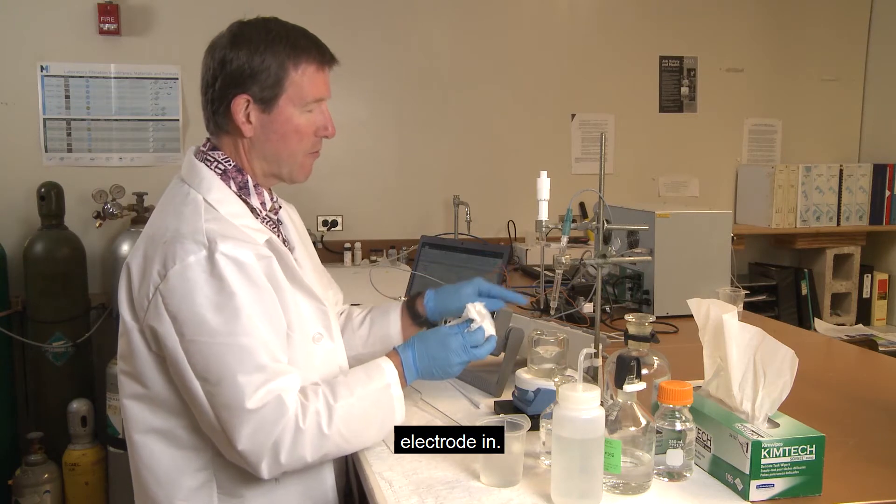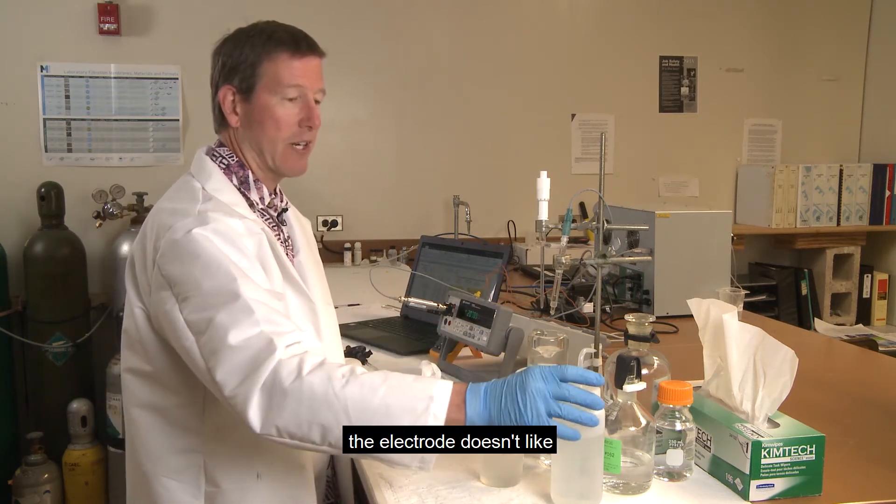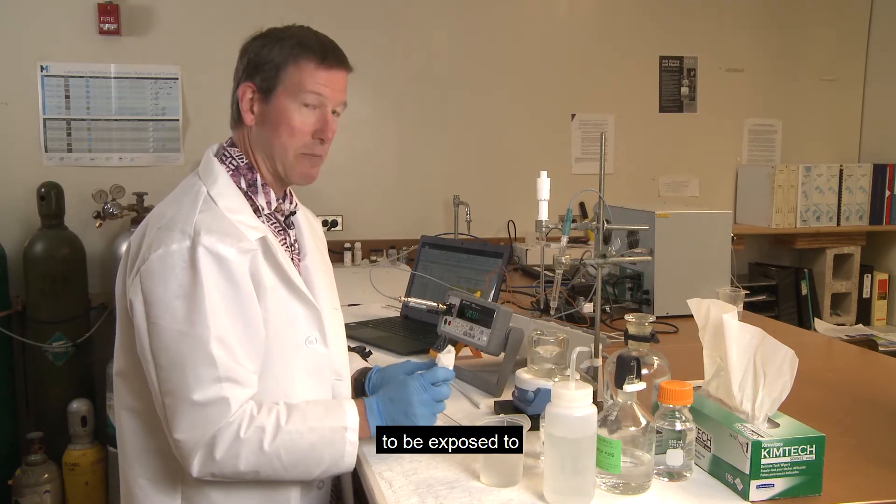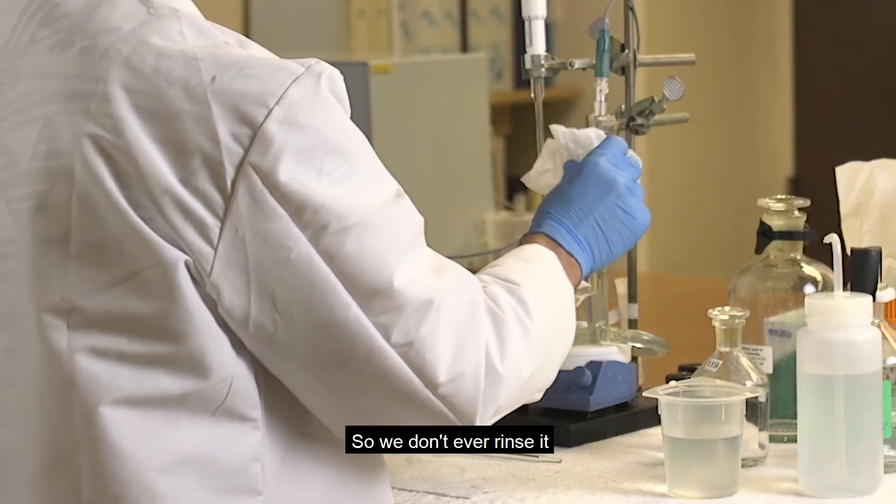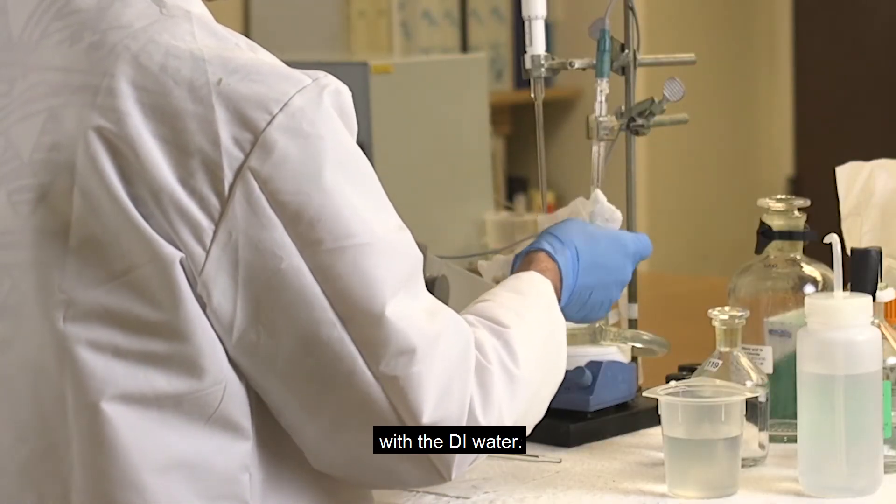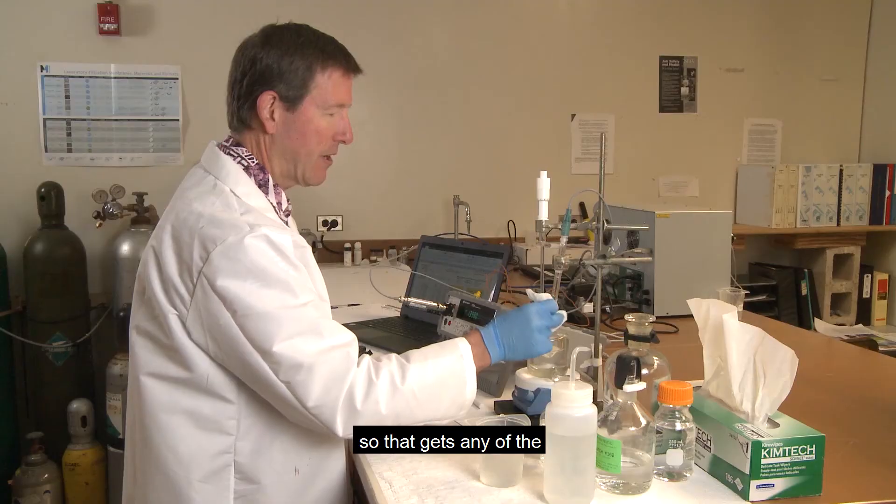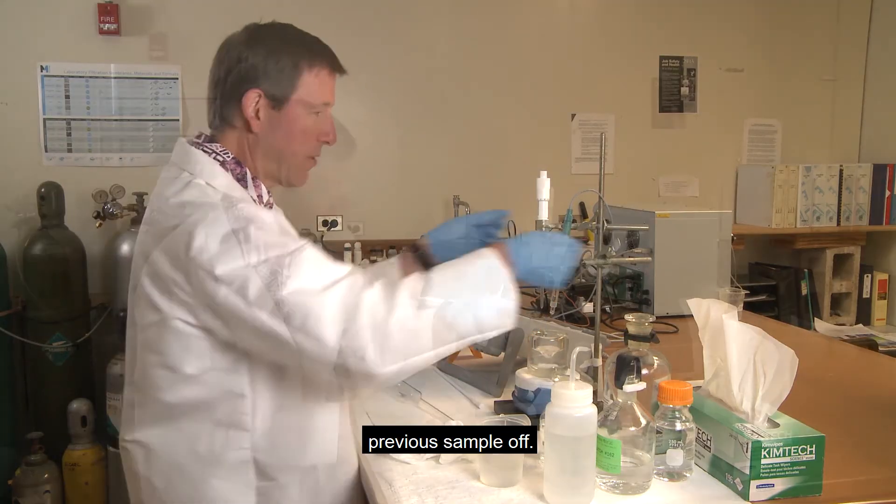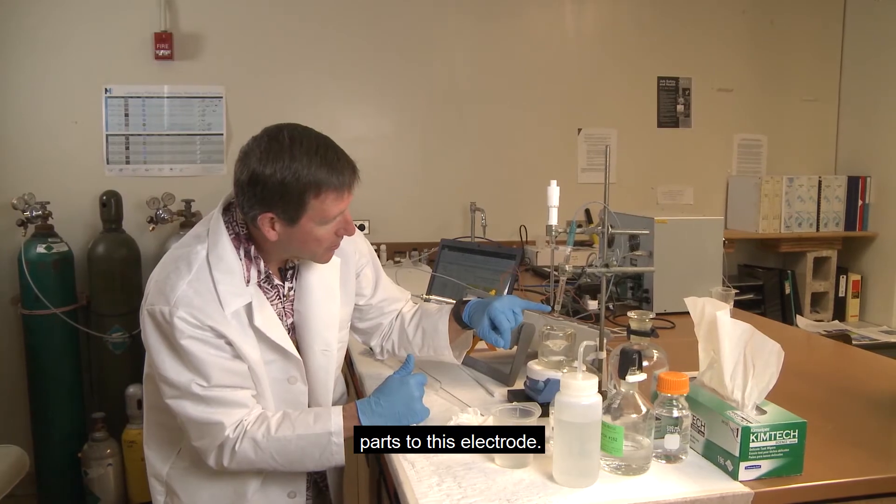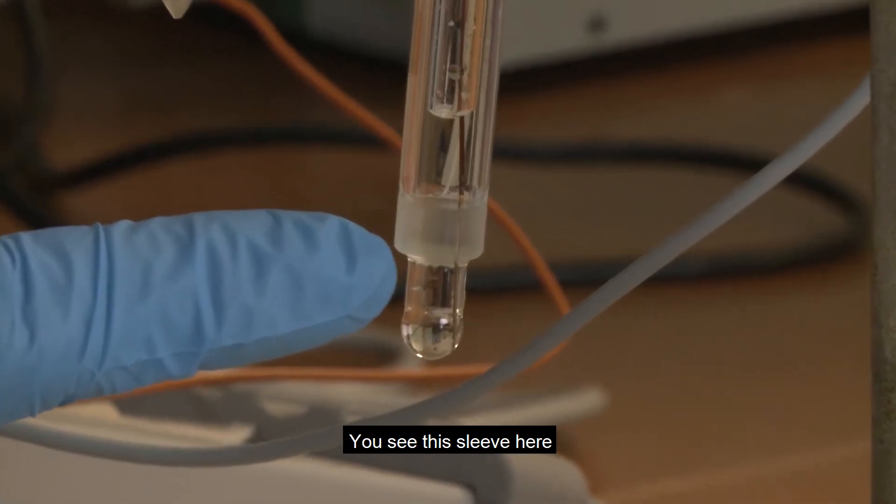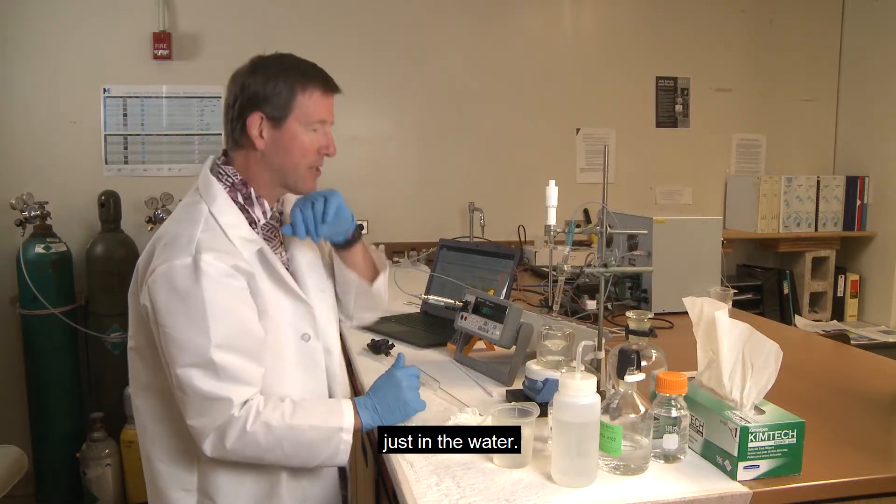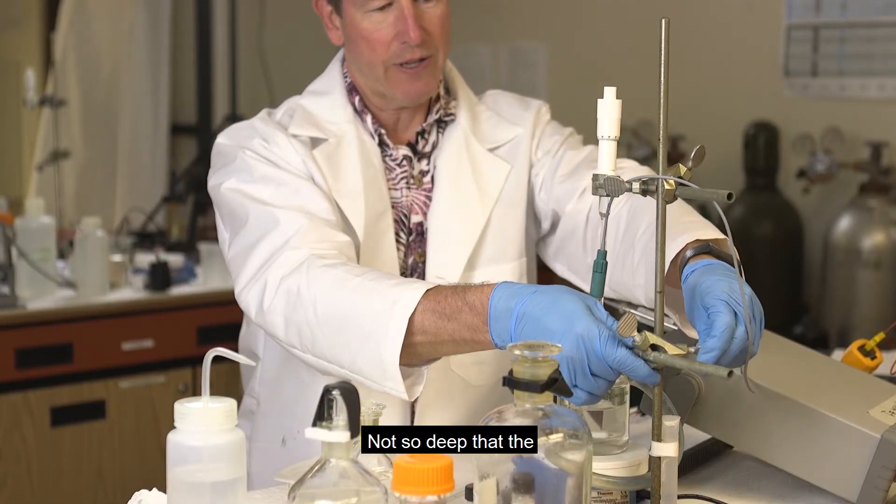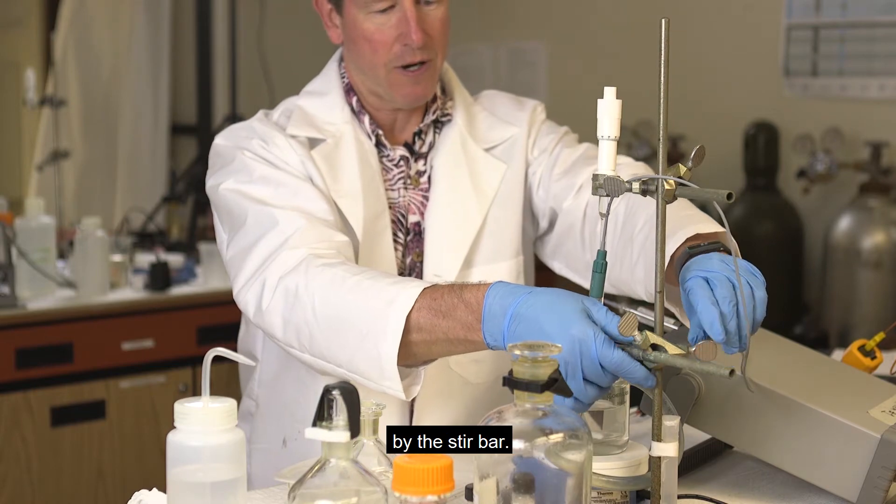Now we're going to put our electrode in. You don't rinse the electrode because the electrode doesn't like to be exposed to different salinity waters. So we don't ever rinse it with the DI water. You just pat it dry so that gets any of the previous sample off. So there's two parts to this electrode. You see this sleeve here, that's the second part of the electrode. So that needs to be just in the water, not so deep that the electrode is being hit by the stir bar.